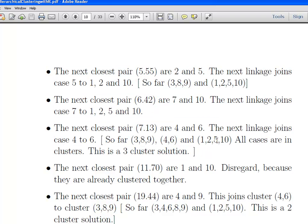Beyond that, the next closest pairing is 1 and 10. These are already in a cluster, so we can disregard that. That will happen - two items already in a cluster will appear on the agglomeration schedule, so you can disregard it. Then after that, 4 and 9. These two sub-clusters will get added together, leaving us with a 2 cluster solution.